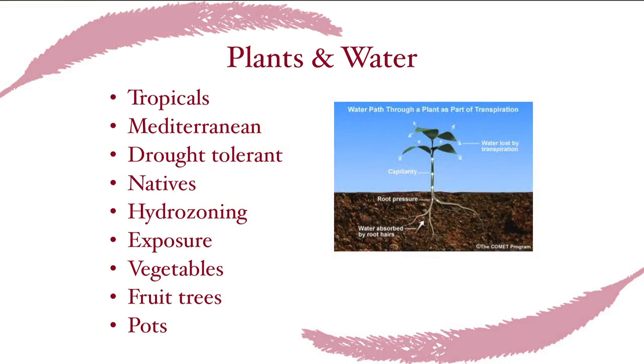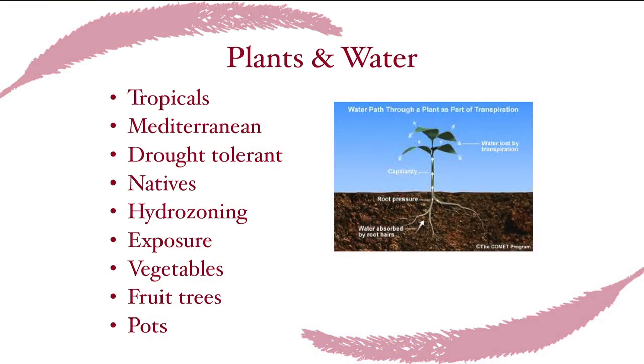Hydrozoning — matching water needs — is really important in design. Exposure matters a lot: a lawn on the south side of the house uses far more water than one on the north or east side. If a client must have a lawn, limit its size and place it where it will use less water. Vegetables, fruit trees, and pots are also high water users.